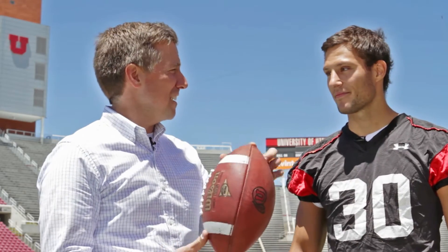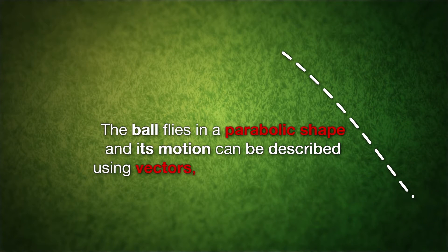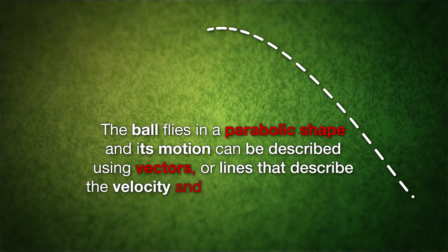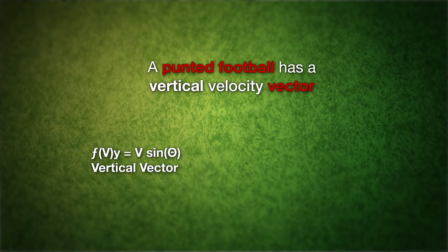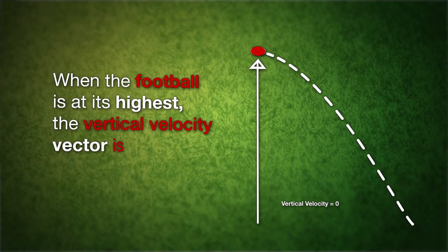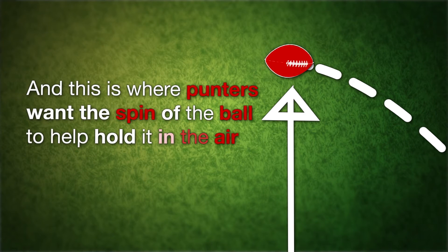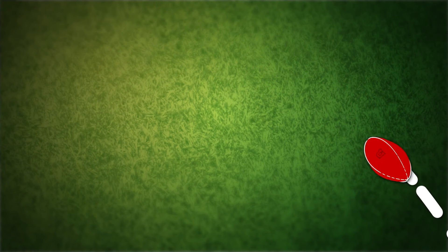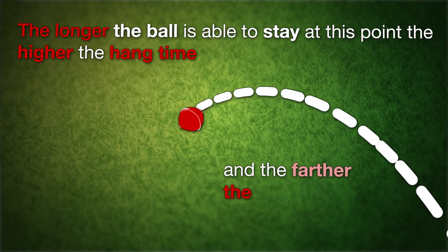Sean, do you ever kick it like this just for fun? You try kicking like that and see what happens. The ball flies in a parabolic shape, and its motion can be described using vectors — lines that describe the velocity and the direction of an object in motion, in this case the football. A punted football has a vertical velocity vector as well as a horizontal one. When the football is at its highest, the vertical velocity vector is zero, and this is where punters want the spin of the ball to help hold it in the air as long as possible. The longer the ball is able to stay at this point, the higher the hang time, and the farther the ball will fly.